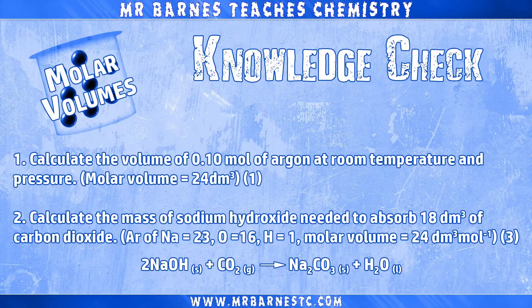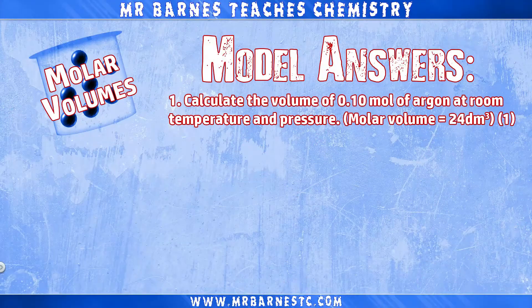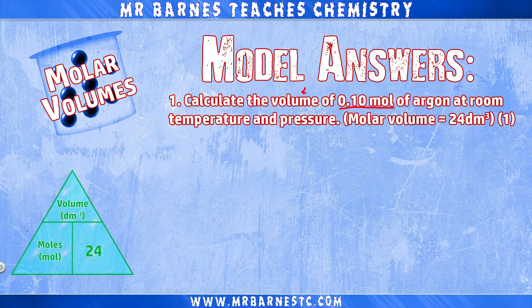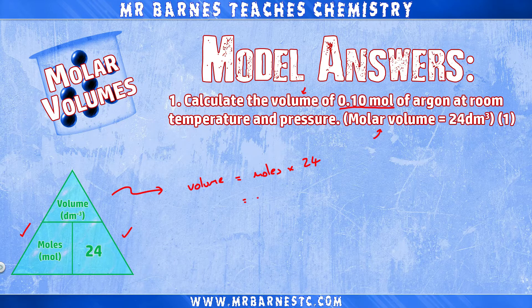That's everything you need to know. Pause the video and have a go at both practice questions, then unpause to go through them. The first question: calculate the volume of 0.1 moles of argon at room temperature and pressure, given the molar volume. From the triangle, volume = moles × molar volume = 0.1 × 24 = 2.4 decimetres cubed.